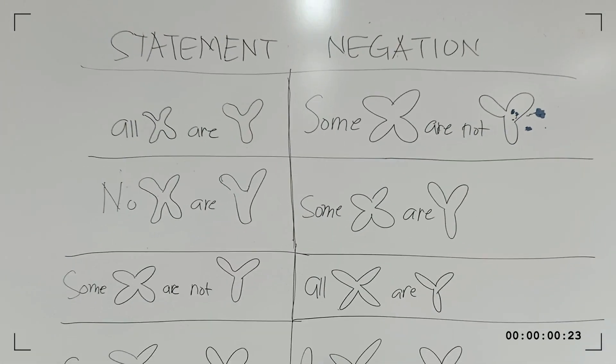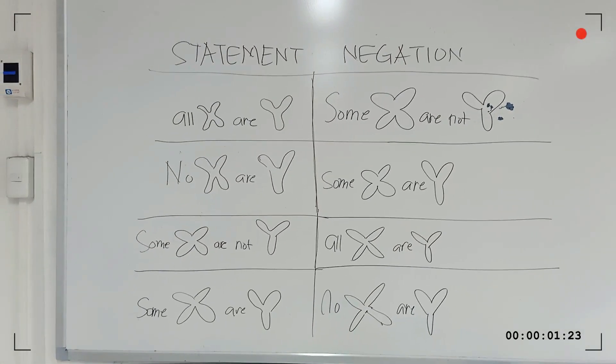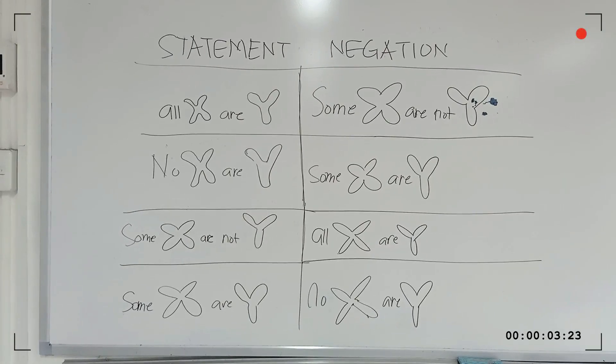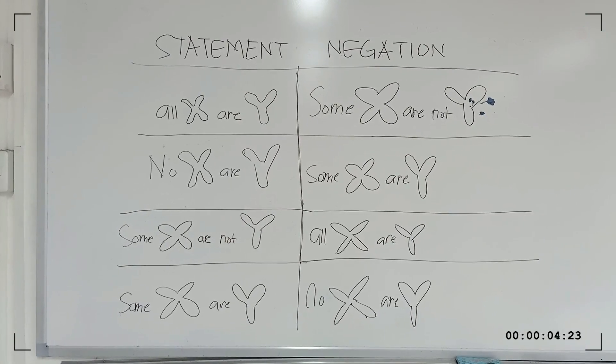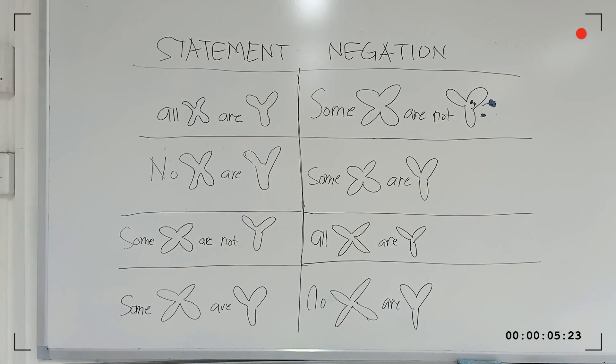To simplify, these are the quantified statements and their negations. Remember, in universal quantification you must find all possible values of the variable x, and in existential quantification you must find the value that satisfies the proposition.